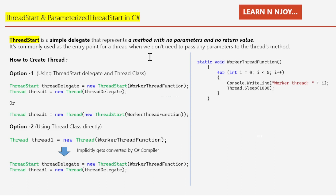A thread can be created in two ways. Option one: using the ThreadStart delegate and the Thread class. We create an instance of the ThreadStart delegate like this — ThreadStart threadDelegate = new ThreadStart(WorkerThreadFunction). The method name here is WorkerThreadFunction, and as you can see, this method has no parameters and no return value.